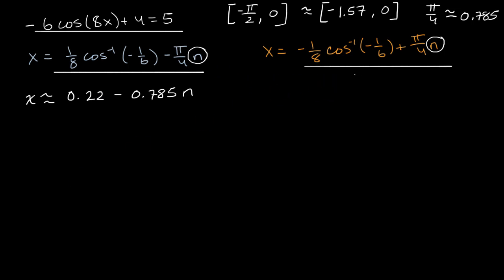And then this one over here on the right, let me do that in the yellow, x could be approximately equal to—well, if this evaluates to approximately 0.22, then this is just the negative of it. So it's going to be negative 0.22. And then it's plus what approximately pi over four is, so 0.785n. And now what we could do is just try different n's and see if we're starting above or below this interval, and then see which of the x values actually fall in this interval.